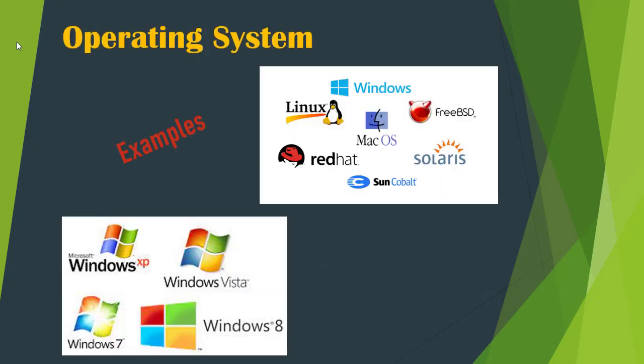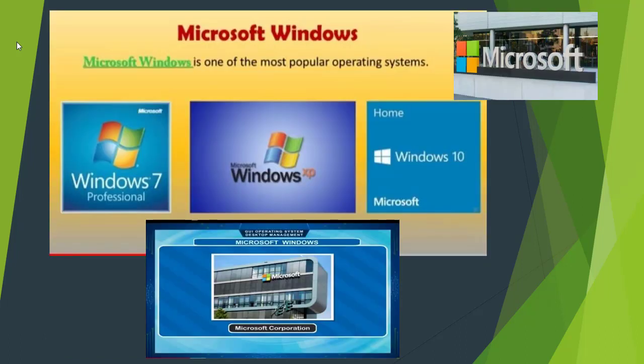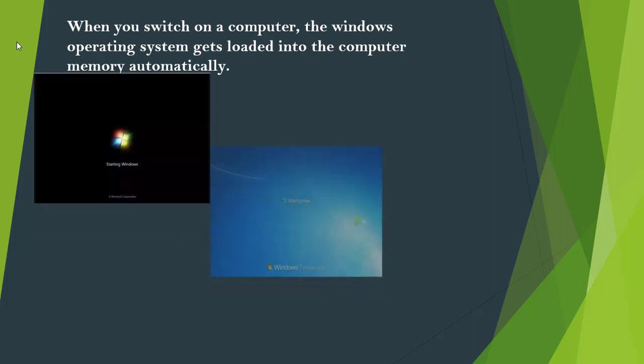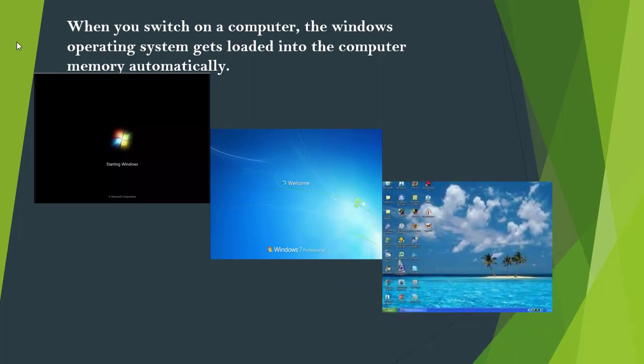These are different examples of operating systems available in the market nowadays. Microsoft Windows is one of the most popular operating systems. Microsoft is a leading American multinational company for computer software and hardware. When you switch on a computer, the Windows operating system gets loaded into the computer memory automatically. After a starting Windows message and a welcome message, your desktop becomes ready for use.